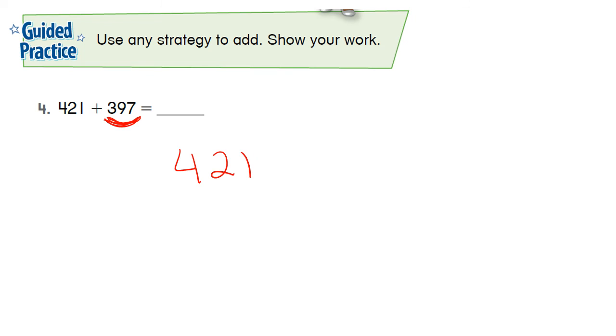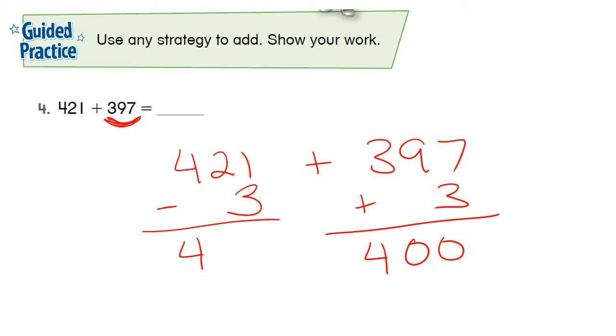So we have 421 plus 397. I'm going to add 3 to 397 and that's going to give me 400. Now where did I get that 3 from? Well, I got it from the first addend, 421, so I'm going to have to subtract 3. So 421 minus 3 is 418.